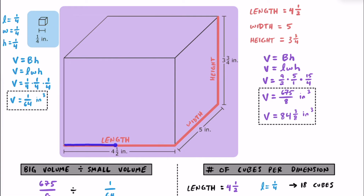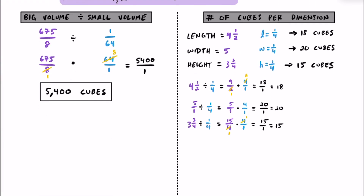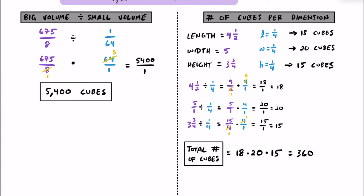So we just figured out that we can fit 18 cubes across the front, 20 rows going back, and 15 layers going all the way to the top of this prism. All we have to do is multiply them together to get the total number of cubes. 18 times 20 gives us 360 cubes on the bottom layer, and then 360 times 15 layers gives us 5,400 of these cubes total.